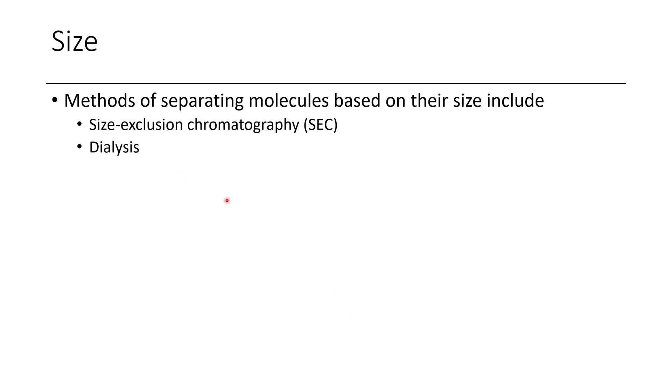Two final things to consider include the exploitation of size. Size exclusion chromatography is a technique often used by biologists as well as polymer chemists to isolate stuff based on their size. Additionally, dialysis can be used.